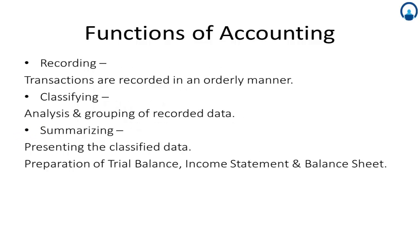These six functions of accounting are in serial order, describing what happens when the accounting process takes place in any organization. Recording is the first and basic function of accounting. It ensures that all business transactions of a financial nature are recorded in an orderly manner. After this step, the person doing accounting has all the data of financial transactions with them.